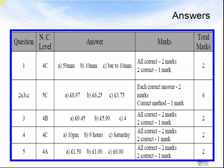Here are the answers. Question 1: A was 15mm, B was 10mm, C: bar to 10mm. Question 2: A, B and C were £8.97. B was £6.25. C was £3.75. Question 3: A was £9.45. B was £5.90. And C was £4.